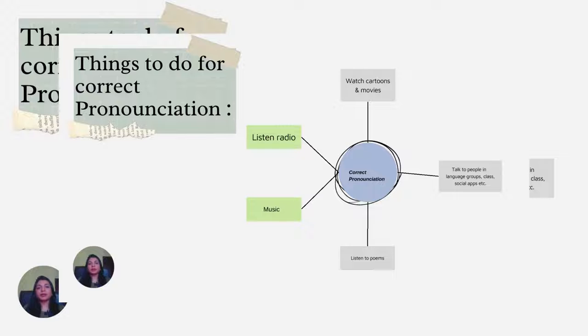Things which you can do for correct pronunciation: First, watch cartoons and movies—it's a great entertainment source. Also, you can listen to the radio; there are numerous channels and you can find the link in the description. You can start listening to music and poems. Start with some easy songs and beginner's poems. Also, immerse yourself in language groups—you can find these groups on social media like Facebook and many other applications. Most importantly, please speak in the class because there will be a teacher who can correct your pronunciation.